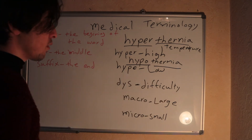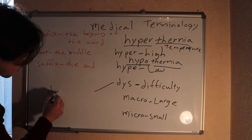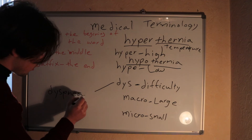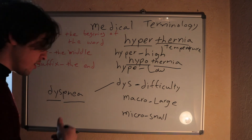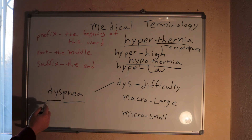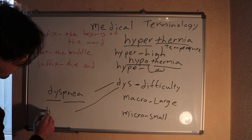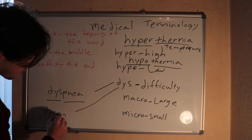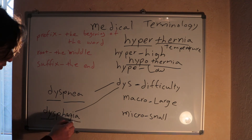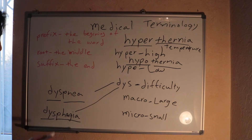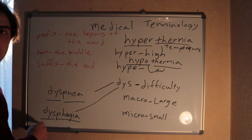For 'dys-', meaning difficulty, we can say dyspnea — 'dys-' is the prefix and 'pnea' means breathing, so dyspnea is difficulty breathing. Or we can say dysphagia — 'dys-' is the prefix, and 'phagia' means swallowing, so dysphagia is difficulty in swallowing.